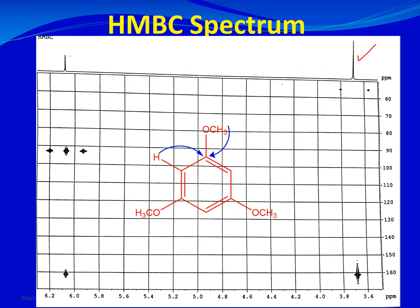In this trisubstituted benzene ring example, there are only two types of protons: the three methoxy groups give one signal and the three aromatic protons give another signal. Underneath the methoxy signal at about 3.7 ppm, one contour meets the carbon scale at about 162 ppm — this is the correlation of the CH3 proton with a quaternary carbon. That same quaternary carbon at 162 ppm also correlates with the aromatic proton at about 6.08 ppm, representing a two-bond and a three-bond correlation respectively.